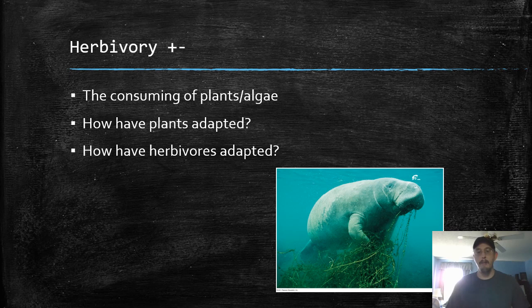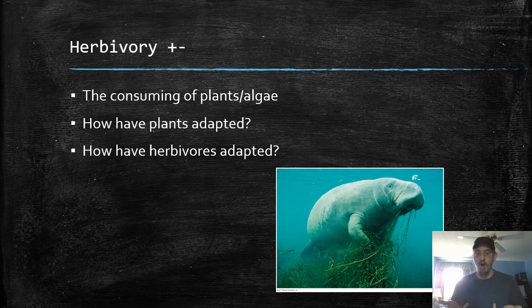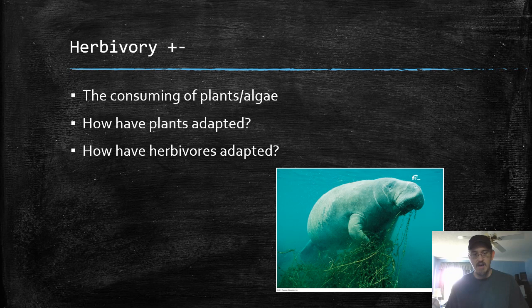Herbivory is a plus-minus type relationship — this is when an organism consumes plants or algae. Plants have evolved in response to this, and algae has evolved in response to this. We call this kind of an evolutionary arms race. Plants evolve defenses, herbivores evolve a way to get around those defenses. This kind of arms race is probably what started the Cambrian explosion — predators evolve teeth, prey evolve shells, predators evolve bigger teeth, prey evolve ways to swim away from predators, and you have this massive divergence of life. This is called co-evolution, when one organism affects the evolution of another organism.